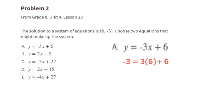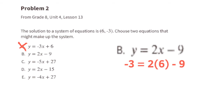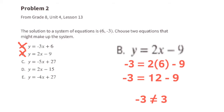Let's start with A: y equals negative 3x plus 6. After we substitute these values, it reads negative 3 equals negative 3 times 6 plus 6. Negative 3 equals 18 plus 6. Negative 3 does not equal 24, so equation A could not make up the system. Let's try equation B — substituting x with 6 and y with negative 3, the equation reads negative 3 equals 12 minus 9. 12 minus 9 equals 3, and negative 3 does not equal 3, so equation B could not make up the system.